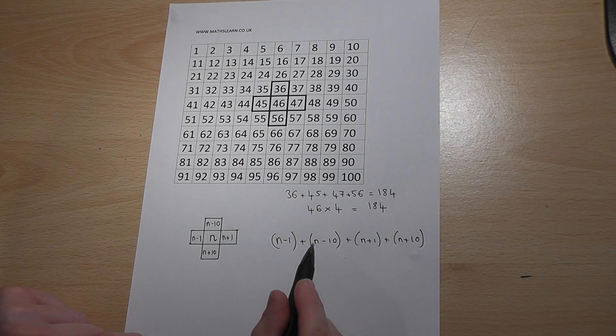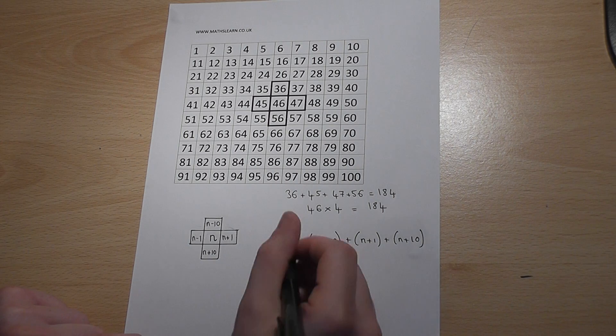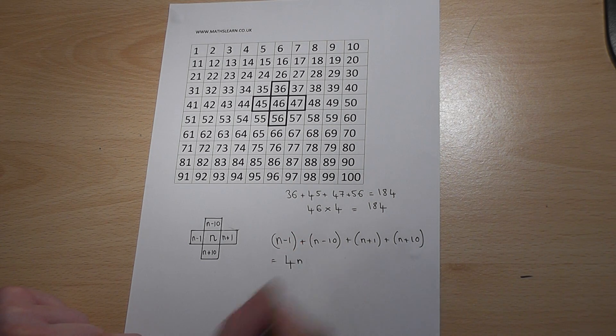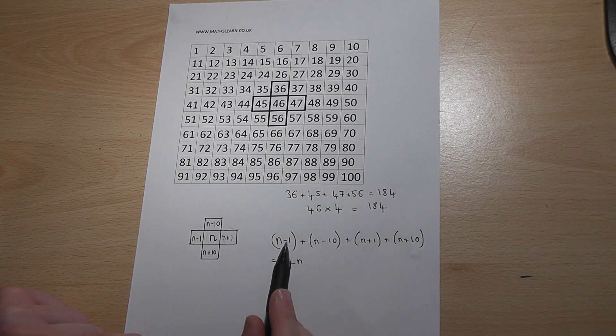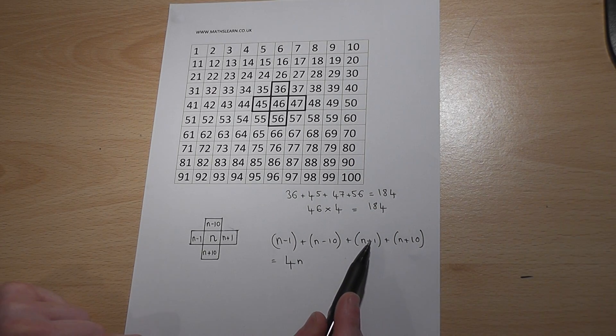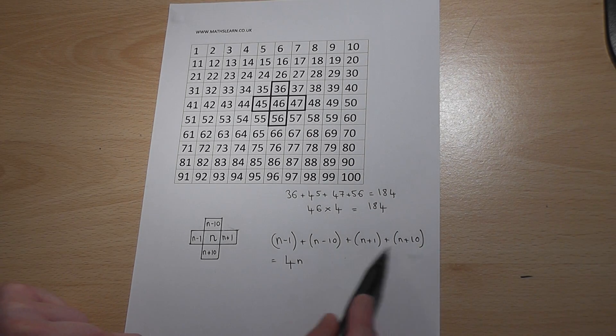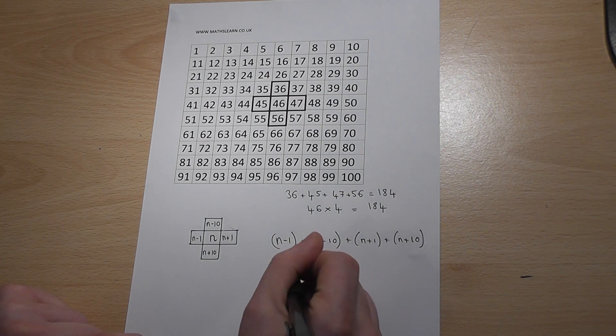Now here I can see an n, n, and an n, which equals 4n. But the minus 1 here cancels with the plus 1 here, the minus 10 cancels with the plus 10 here, so that is just the answer.